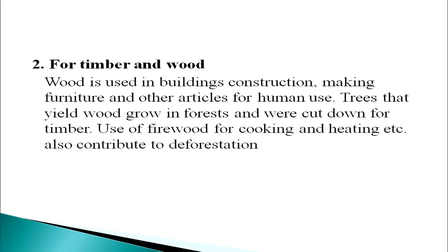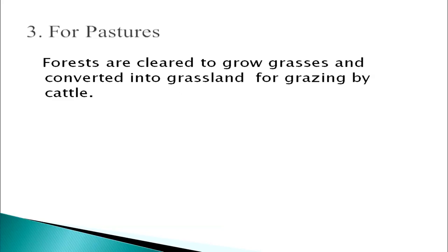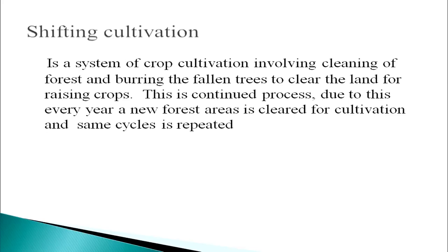For timber and wood, trees that yield wood grow in the forest and were cut down for building construction, making furniture and other articles, and use of firewood for cooking and heating also contributes to deforestation. Forests are also cleared to grow grasses and converted into grassland for grazing by cattle. Shifting cultivation is a system of crop cultivation involving clearing of forest and burning the fallen trees to clear the land for raising crops. This is a continuous process whereby every year a new forest area is cleared for cultivation and the same cycle is repeated.